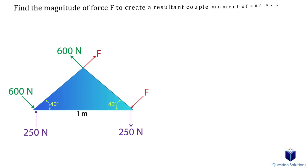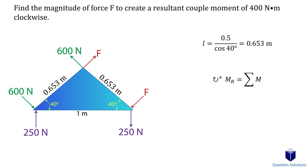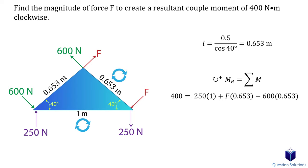Let's take a look at this question where we need to figure out the magnitude of force F so that the resultant couple moment is 400 newton meters clockwise. We need to add up all the couple moments created by each of the forces and set it equal to 400. Using trigonometry, each side of the triangle is 0.653 meters. Assuming clockwise to be positive, both the 250 newton force and the unknown force create clockwise rotation, while the 600 newton force creates counterclockwise rotation. The distance between the 250 newton forces is one meter and the distances between each of the other forces are 0.653 meters.